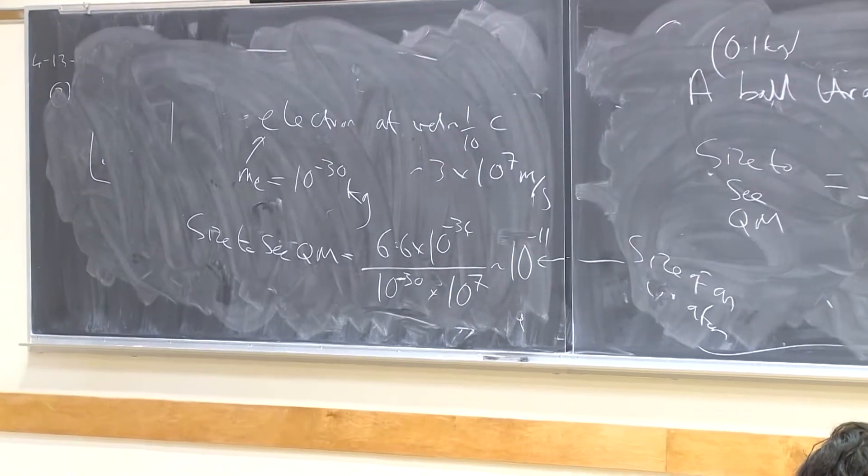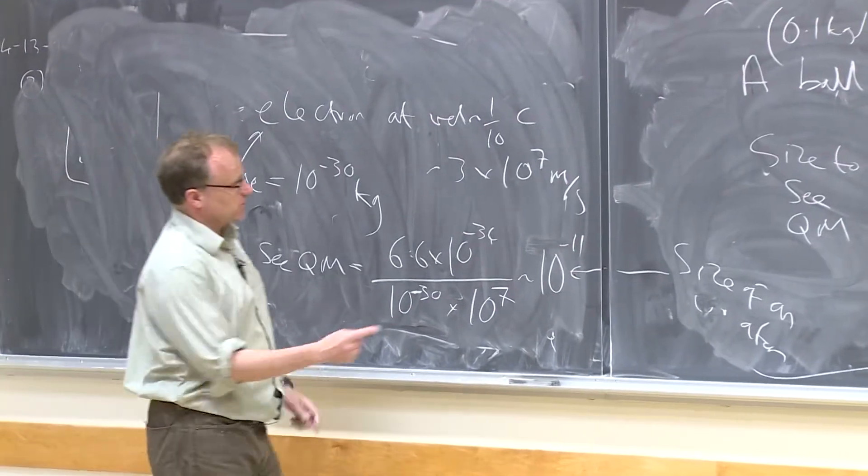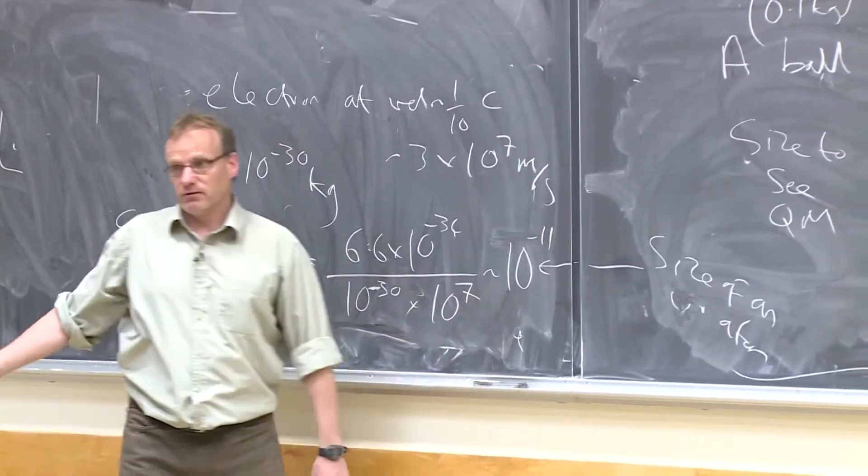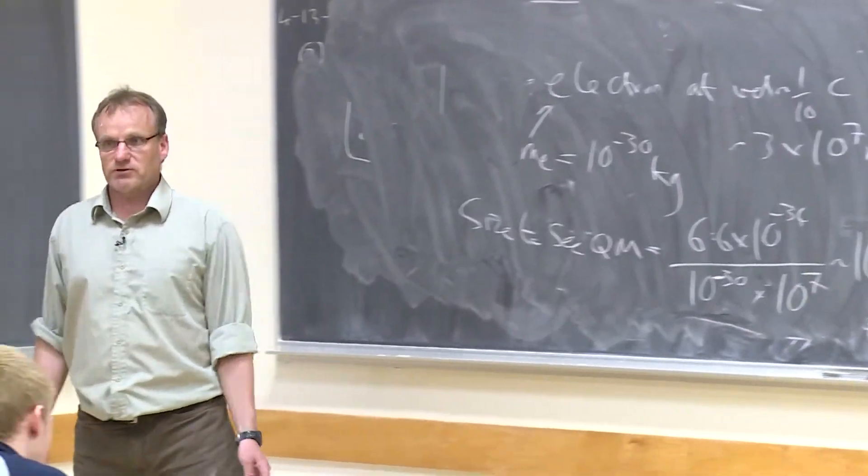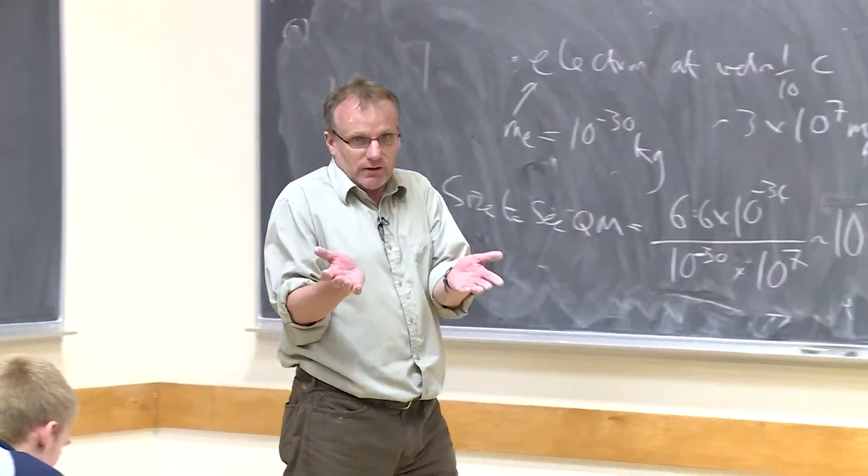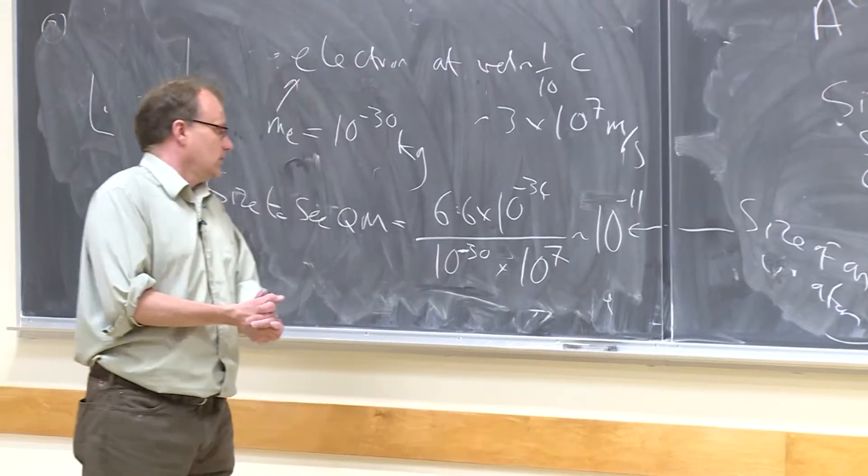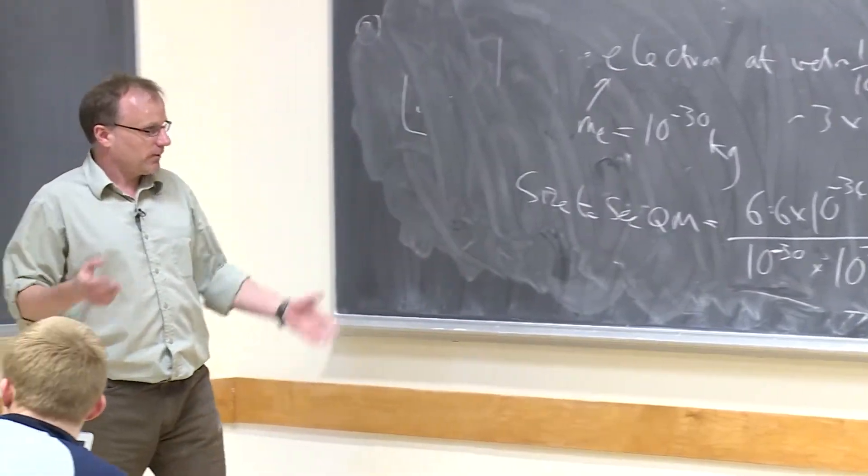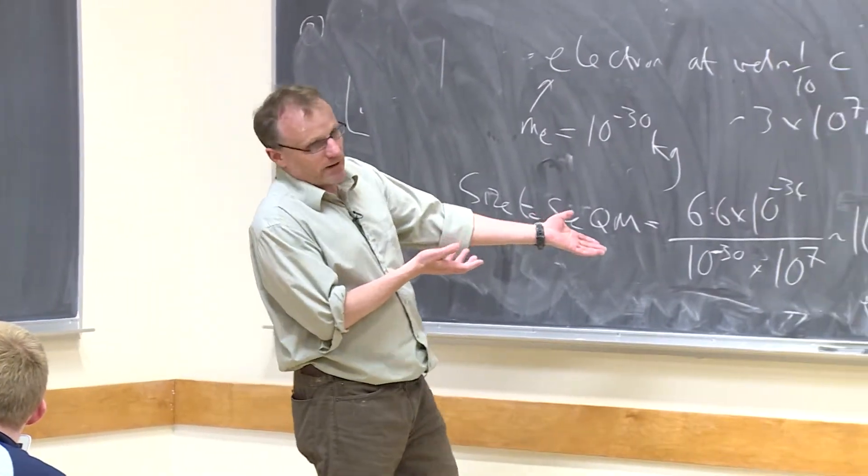So we could never see quantum mechanics because we were not able to measure down to this scale until recently, until the 20th century. So it's a question of precision. A lot of science has done exactly the same thing. Astronomy. Why can we see so many exoplanets? Because we have much more precise optics.